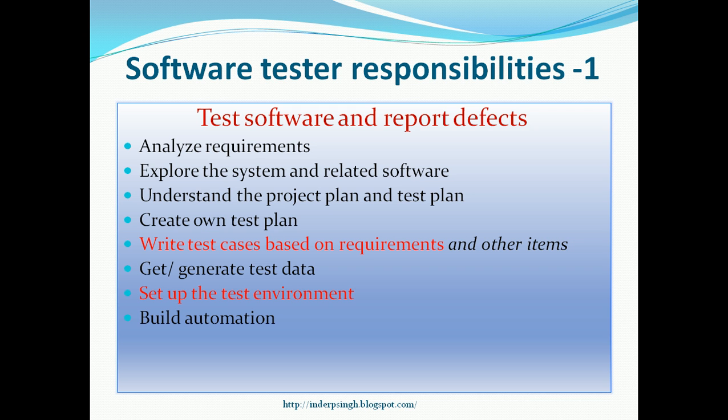It is possible that the team uses automation. Automation is not merely automated testing — it can be used to automatically perform certain tasks required for testing, such as automatically generating test data or automatically running certain test cases. There are tasks that can be done with the help of automation in a faster and more convenient way. If automation is being used, the tester is responsible for building that automation and making sure it works correctly.